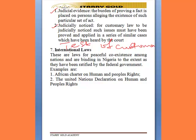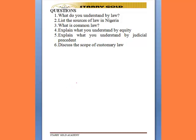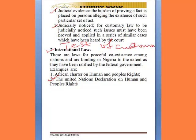Now let's move to international law as a source of law. Because the world today is a global village, there is need to regulate the conduct of society, and because of that, international law becomes another source of law in Nigeria. Nigeria has adopted or domesticated into its legislation various international laws — for example, the African Charter on Human and Peoples' Rights and the United Nations Declaration on Human Rights. These have been domesticated into Nigerian law, and as such, Nigeria is bound to obey these globally accepted standards.